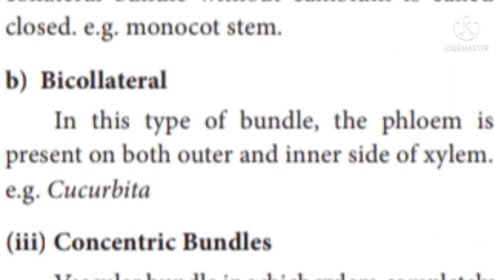Second type is bicollateral. In this type of bundle, the phloem is present on both outer and inner sides of the xylem. Xylem is in the center. That is called a bicollateral bundle.